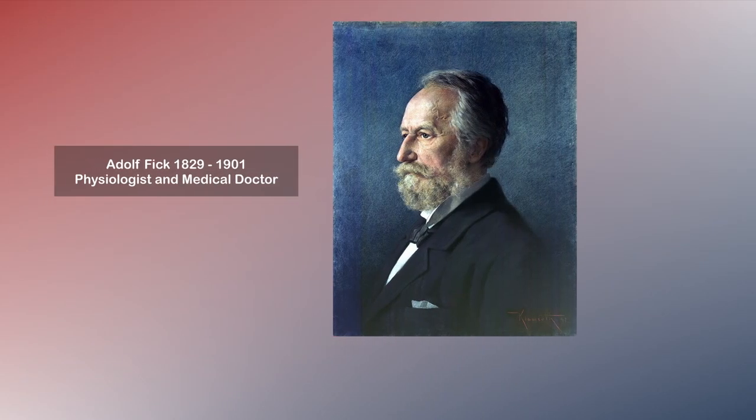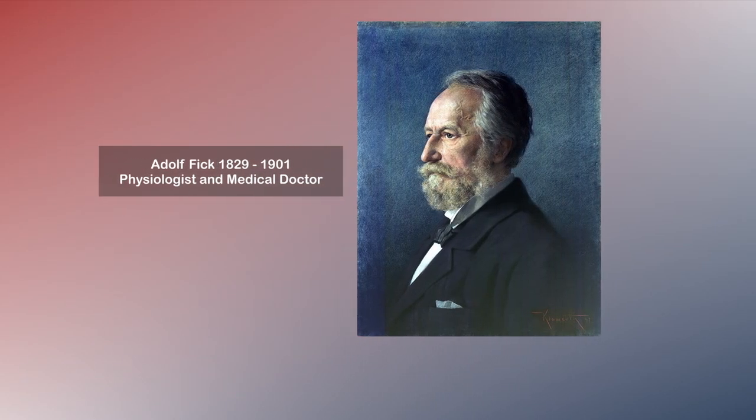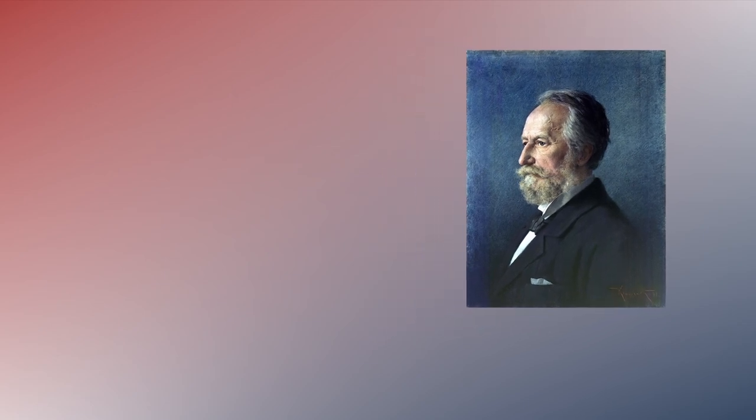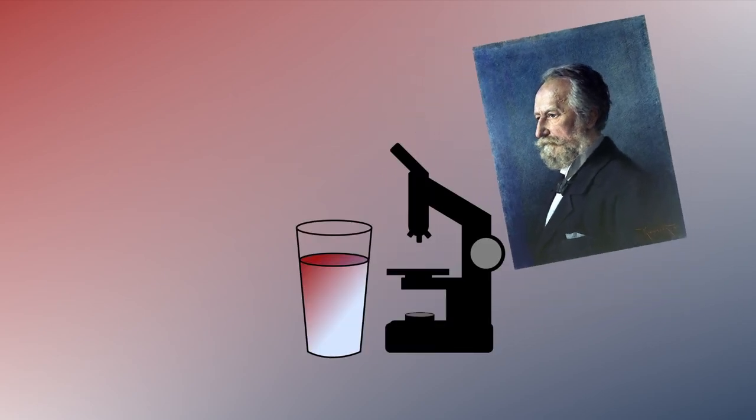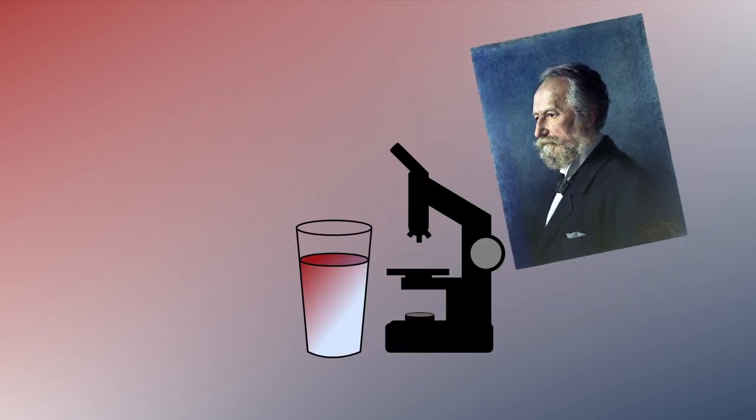Adolf Fick, born in 1829, was a German physiologist and medical doctor. In the 1850s, he worked on diffusion experiments, studying how particle concentrations would move and change within a fluid. Fick uses experiments to derive two mathematical laws for diffusion, and these laws are what he's most known for today.